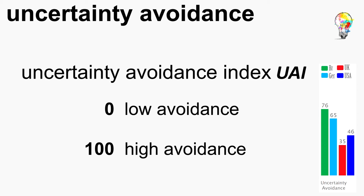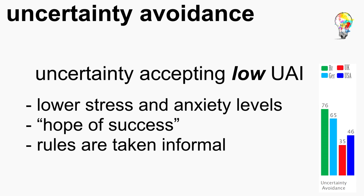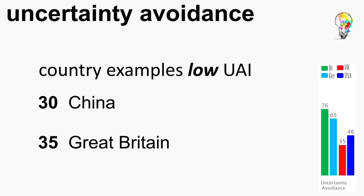The Uncertainty Avoidance Index is also scaled from 0 for low and 100 for high avoidance. As with the PDI, the interrelated position for every society is represented by these scores. In uncertainty-accepting societies, people have lower stress and anxiety levels, stronger achievement motivation, hope of success, and are willing to break rules for pragmatic reasons. Rules are taken more informally and there is reluctance in obeying them. Good examples are higher investments in risky ventures and a higher number of corporation establishments, because these societies have fewer rules making it easier and faster to establish a company. Country examples are China with a score of 30 and Britain with a score of 35.